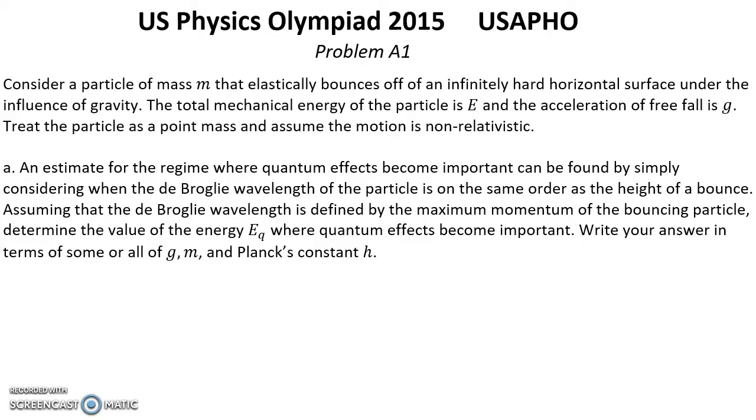Write the answer in terms of sum of all H, G, M and Planck constant H. Solution. From definition of de Broglie wavelength we can write that momentum P equals H over lambda where H is Planck constant and lambda is de Broglie wavelength. Now because we consider that lambda equal height, we can write this relation.